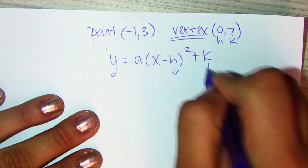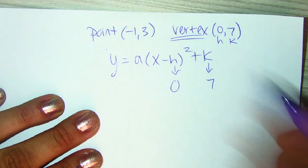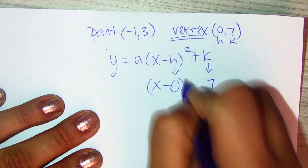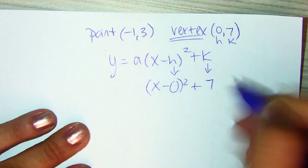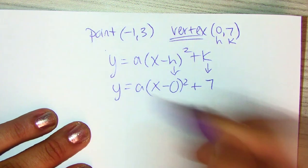So, automatically, you know that these values go here. And then, now, you have this equation.